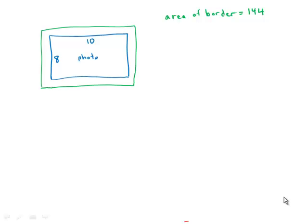A border of uniform width is placed around a rectangular photograph that measures 8 inches by 10 inches. If the area of the border is 144 square inches, what is the width of the border in inches?